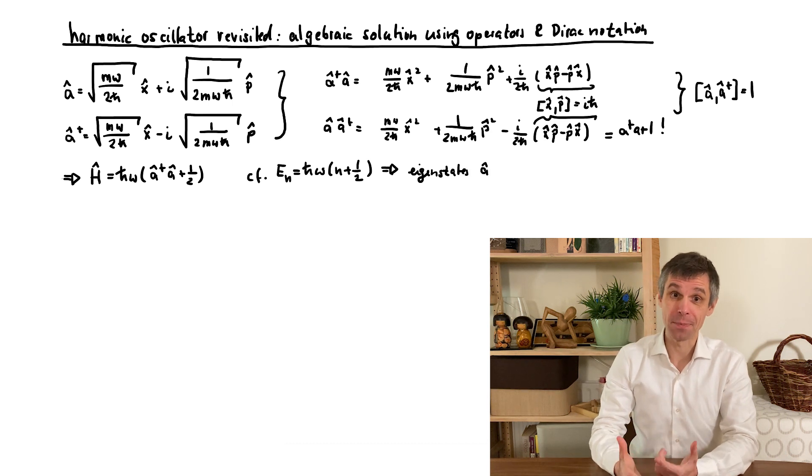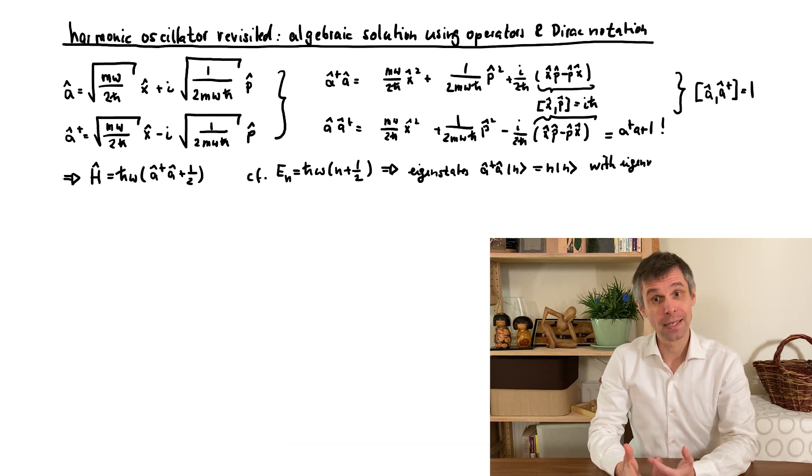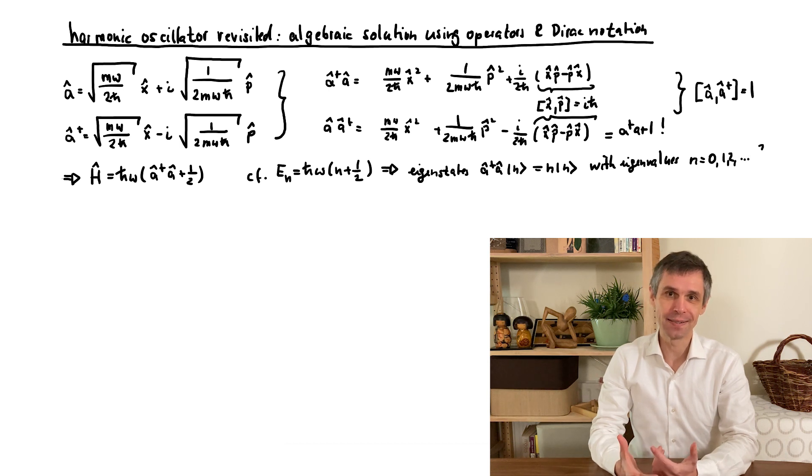Therefore, we give the states a very abstract name. This is just a placeholder for the actual eigenstates written in our general notation. This labels the states by their eigenvalue n. But we really still need to show that these are indeed integers also in this way to arrive at a solution.